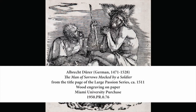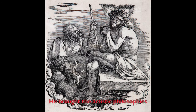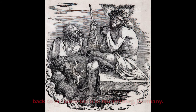Today I'm pleased to present this 16th century wood engraving by German master Albrecht Dürer. Master painter, draftsman, and printmaker Albrecht Dürer was among the most influential of the northern renaissance artists. He brought the artistic philosophies of proportion and perspective, popular in the southern renaissance of Italy, back to his hometown of Nuremberg, Germany.